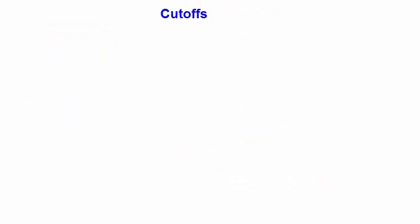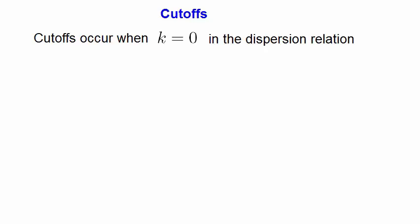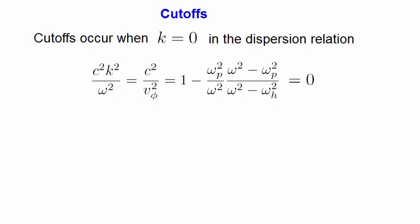Now let's look at cut-offs. Cut-offs occur when the wave number, k, is equal to zero in the dispersion relation. Let's rewrite the dispersion relation where this time the left-hand side must go to zero since k must go to zero. The solution for ω now has this form. There are two solutions to the dispersion relation where ωc has a plus or minus in front of it.